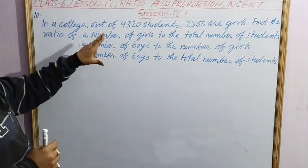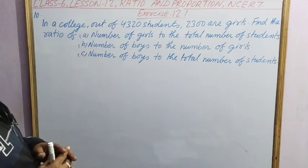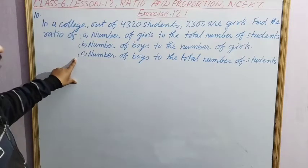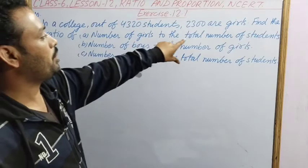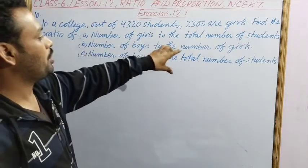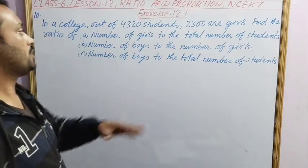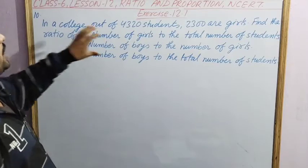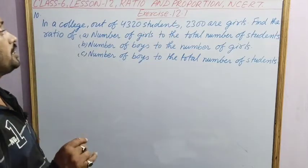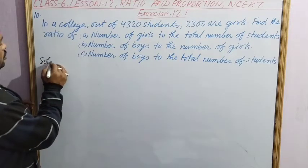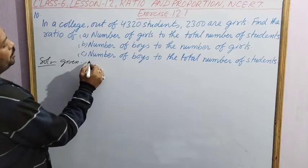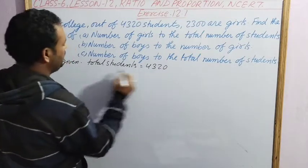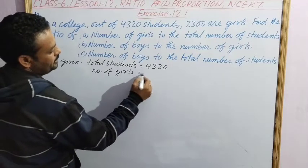Next, Question Number 10 says: in a college, out of 4320 students, 2300 are girls. Find the ratio — we have three parts: A, B, and C. First ratio in A: number of girls to number of students. Second part: number of boys to number of girls. Third: number of boys to number of students. Total students is 4320, number of girls is 2300, so first we find the number of boys.